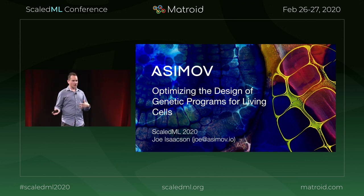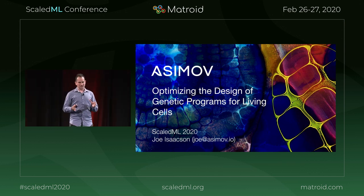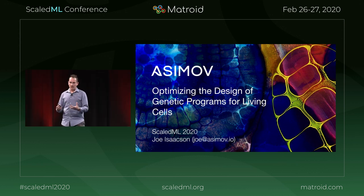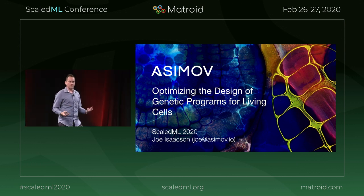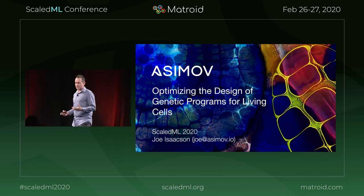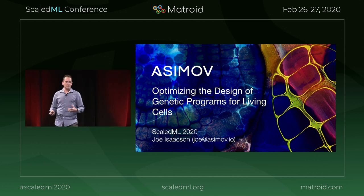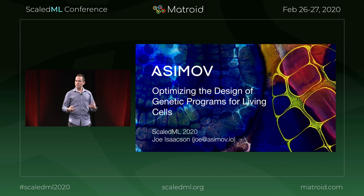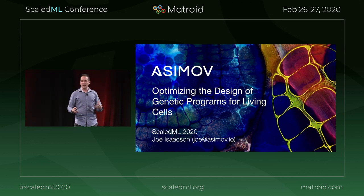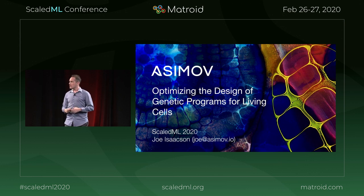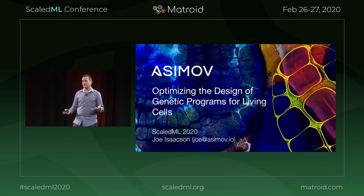I'm coming in from the Boston area where I work at a small biotech company called Asimov. Asimov's core products are cell lines that we develop and engineer to be able to produce molecules of interest to pharmaceutical partners — things like antibody therapies, viral vector-based gene therapies.